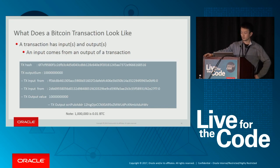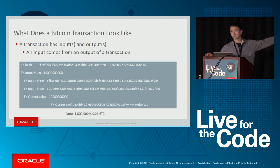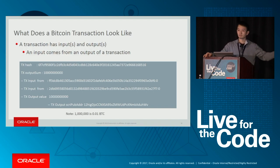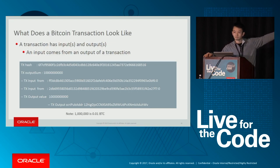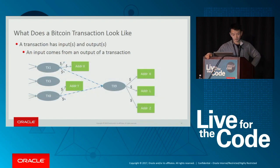Now let's look at the technical side — what does a Bitcoin transaction look like? A transaction has a hash and an output sum, which is the total amount of Bitcoins transacted. In daily life, payments are usually from one person to another, but Bitcoin transactions can have many inputs and many outputs. This is a tabular or text representation of a Bitcoin transaction.